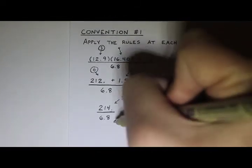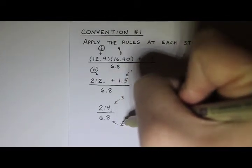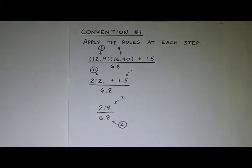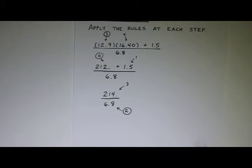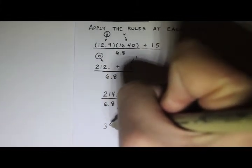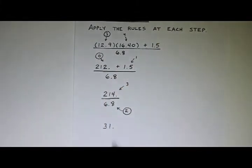And the last step, this has three significant figures. That has two significant figures, two wins. Remember when you multiply or divide, you count significant figures. And so when I do this division, I would get 31, and I'll put a decimal point there to indicate that these are both significant figures. So that's convention one.